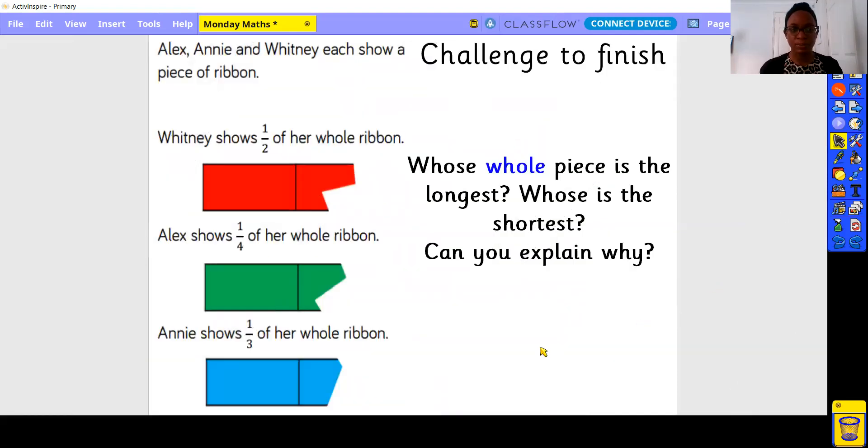Challenge to finish. Alex, Annie and Whitney each show a piece of ribbon. Whitney shows half of her whole ribbon, Alex shows a quarter of her whole ribbon, and Annie shows one third of her whole ribbon. Whose whole piece is the longest? Whose is the shortest? Can you explain why? There's your challenge to finish. Do give those activities a go, and then come back for your answers, which will follow. Good luck.